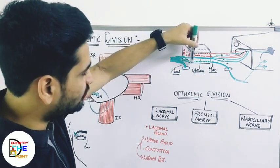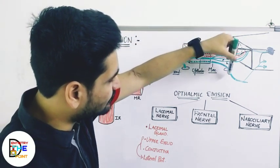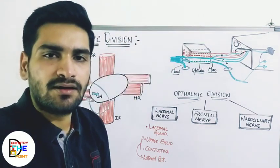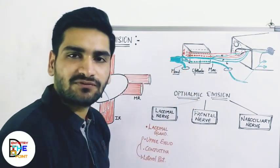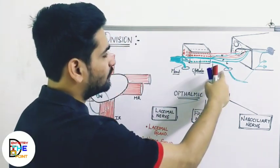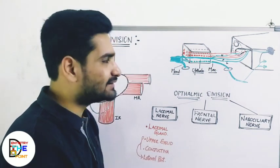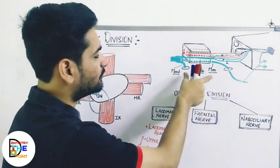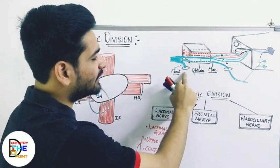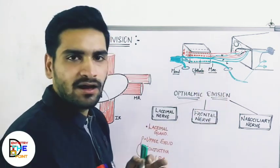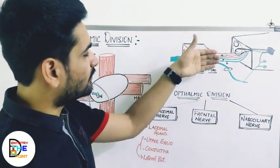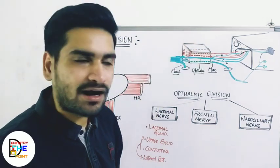The uppermost, the green colored one, is ophthalmic — which we have to study. The dotted one is maxillary, and the third one exiting is mandibular. The mandibular exits through foramen ovale, and maxillary exits through foramen rotundum. So the mandibular and maxillary divisions exit respectively from foramen ovale and foramen rotundum.